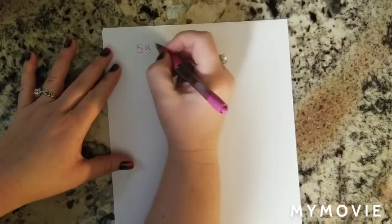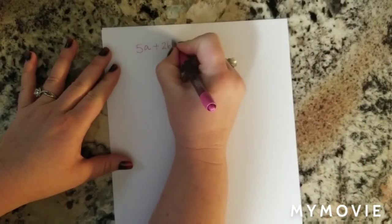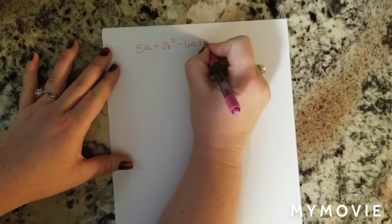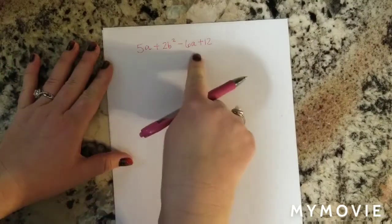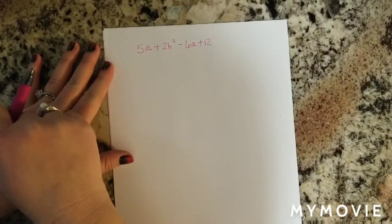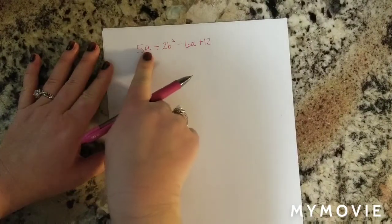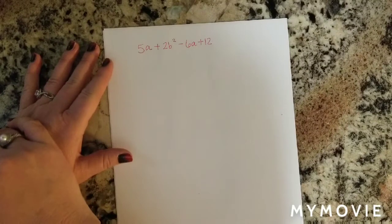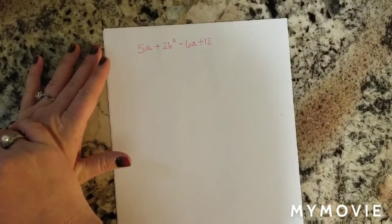So let's say we had 5a plus 2b squared minus 6a plus 12. This is an expression — I know because there is no equal sign. I can't solve for variable a or variable b squared, but I can make it easier by combining my like terms.